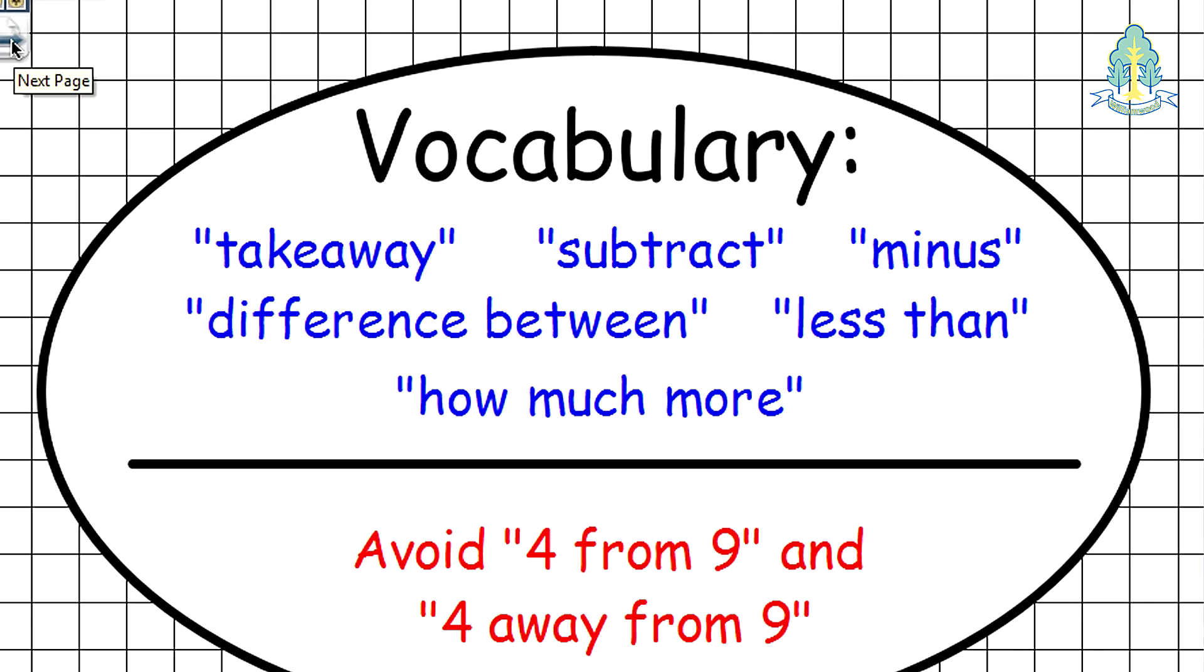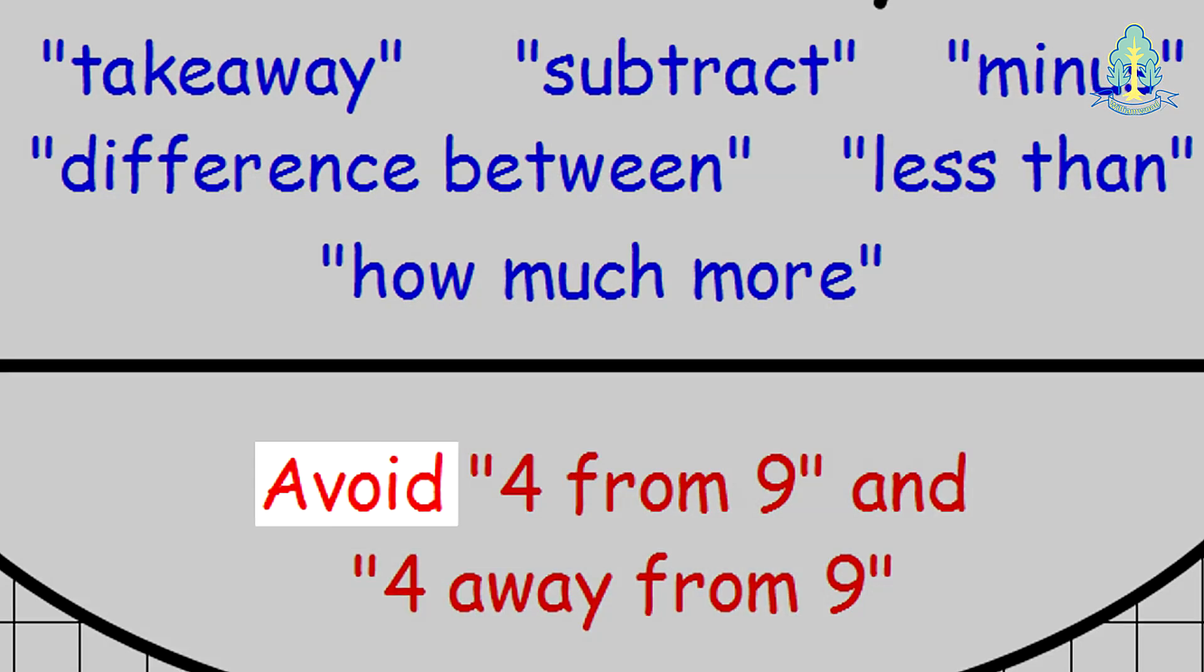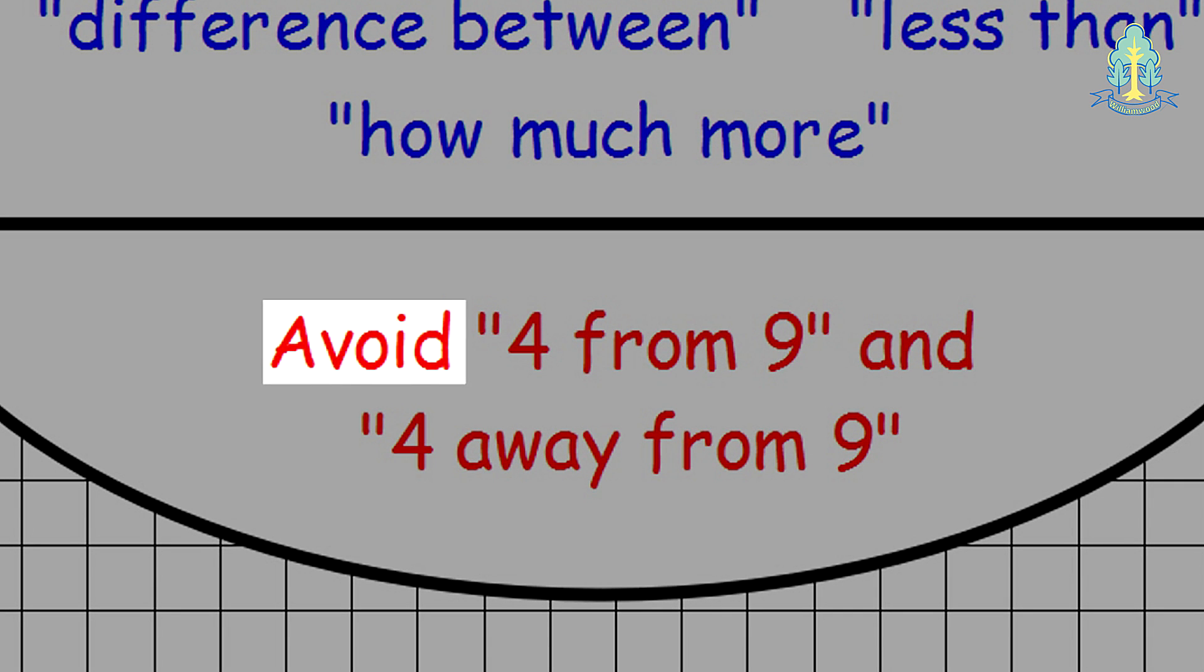Vocabulary your child should be familiar with is take away, subtract and minus, then progressing to use difference between, less than, and how much more. We avoid using for from 9 and for away from 9 as from and away from can confuse the child in the order they should subtract in.